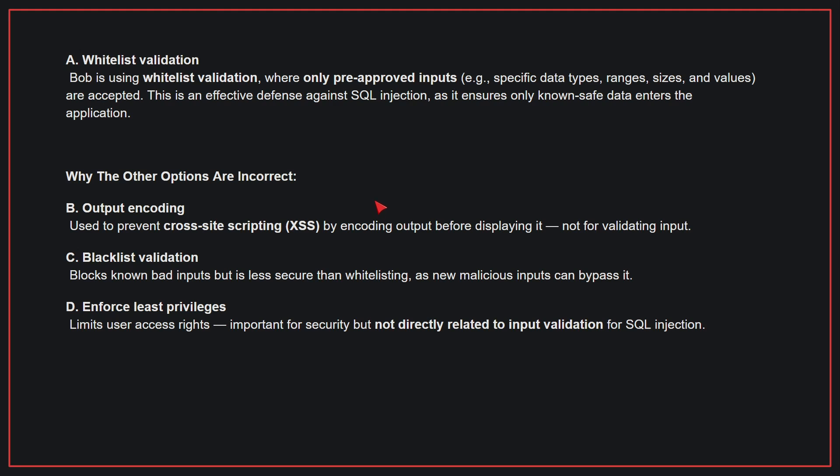Why the other options are incorrect? B. Output encoding — this is used to prevent cross-site scripting by encoding output before displaying it, not for validating input. C. Blacklist validation — this blocks known bad inputs but is less secure than whitelisting, as new malicious inputs can bypass it. D. Enforce least privileges — this limits user access rights, important for security but not directly related to input validation for SQL injection. Therefore, the correct answer is A.